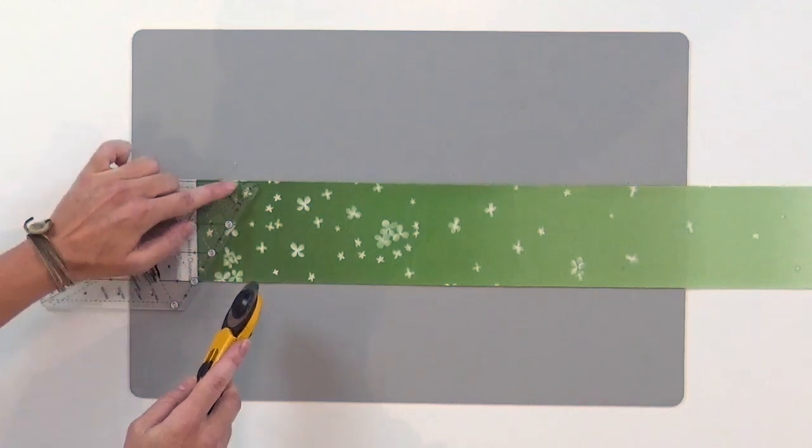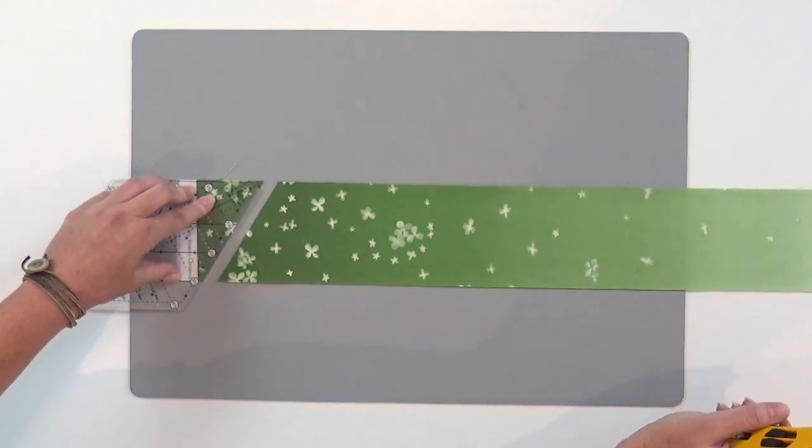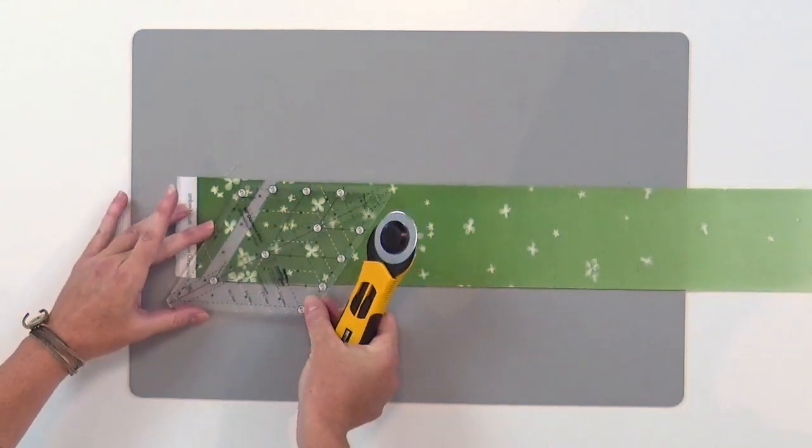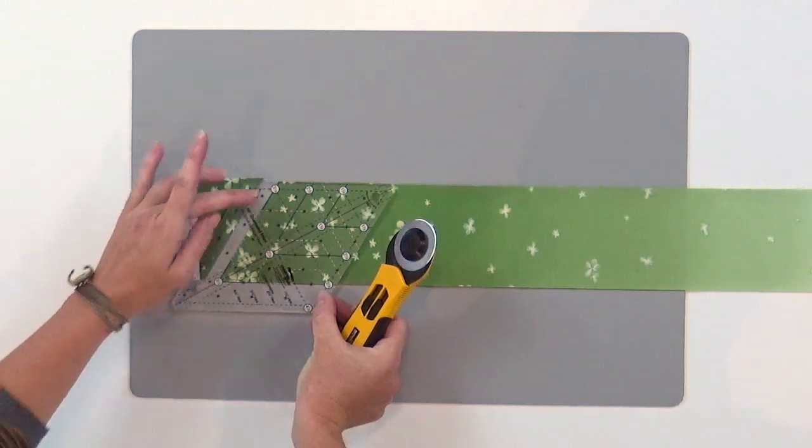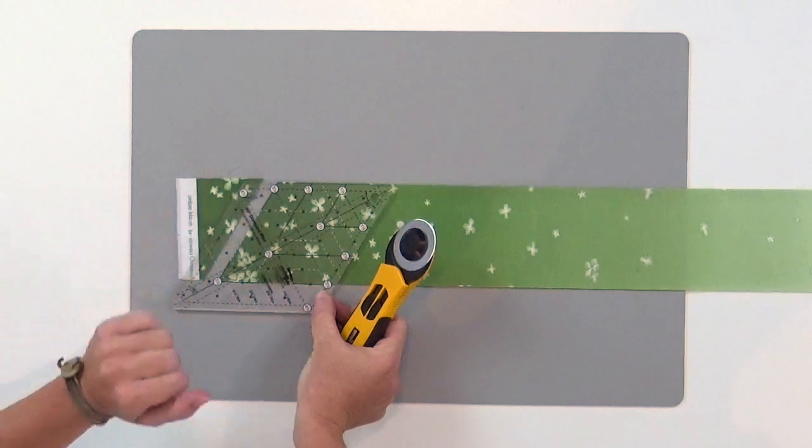I've got my three and a half inch line at the edge of the ruler here. Now I've got my cut, my first cut. Moving on, I can now line up my three and a half inch diamond line with my fresh cut end.